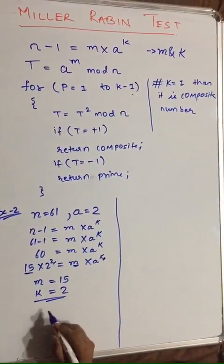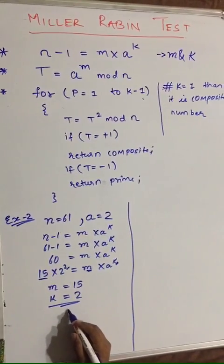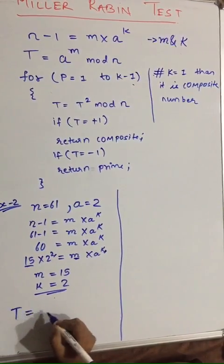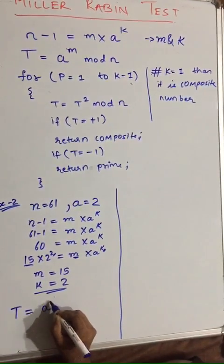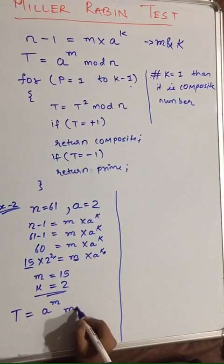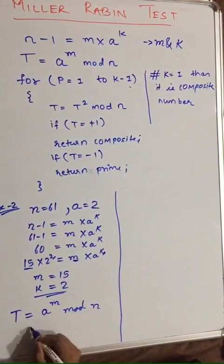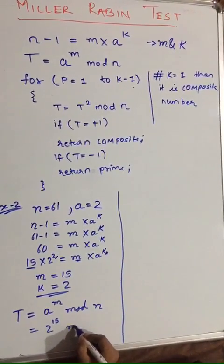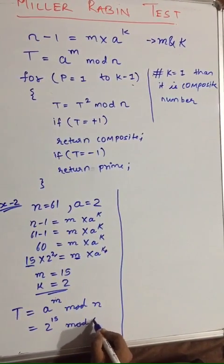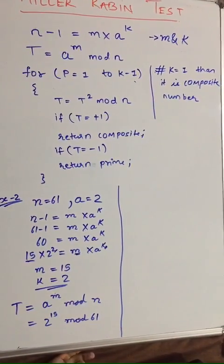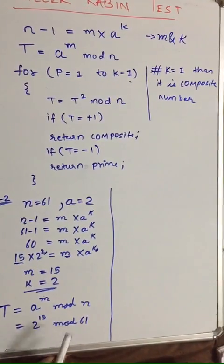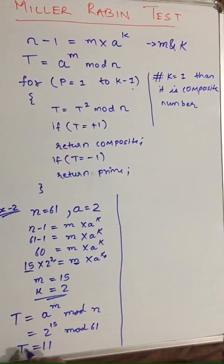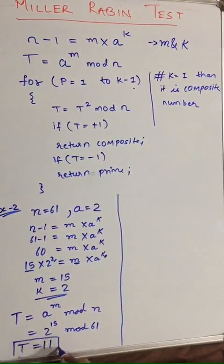Using these two values we find step two, which is t. So t is equal to a raised to m mod n, which is 2 raised to 15 mod 61. Solving this using the modular exponentiation method we have taught, we get t equal to 11.